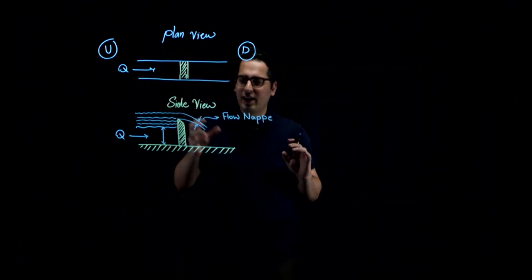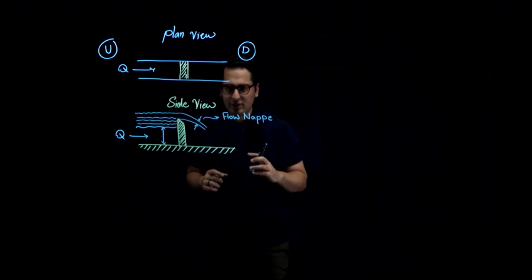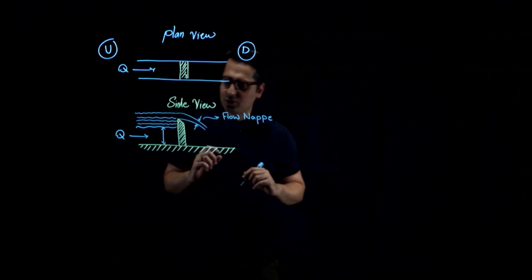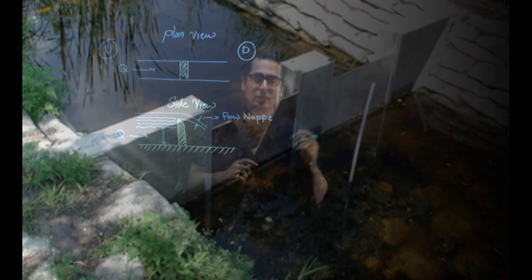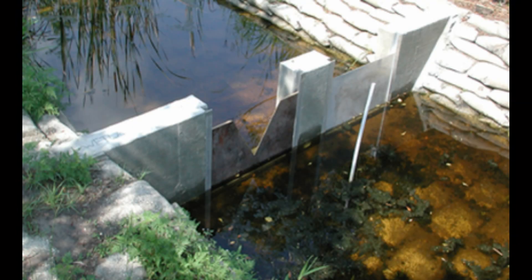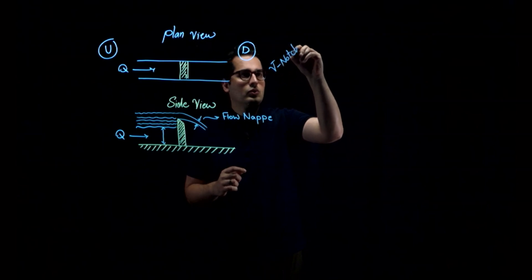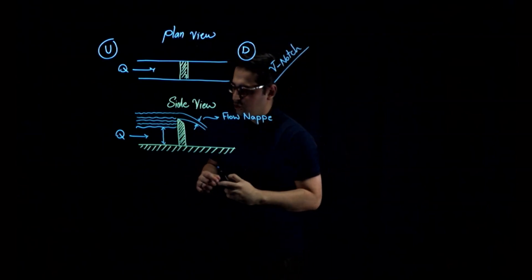Before talking about the discharge and how to measure that, let me tell you different shapes and different types of weirs. So we have rectangular weirs, and also we have triangular weirs, and they are called V-notch weirs. We have two different types of weirs.